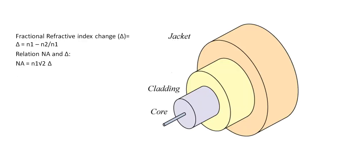The fractional refractive index change, delta, is defined as: delta equals (N1 minus N2) divided by N1. The relation between Numerical Aperture and delta is: NA equals N1 multiplied by the square root of 2 delta.